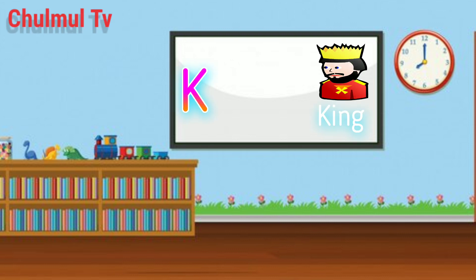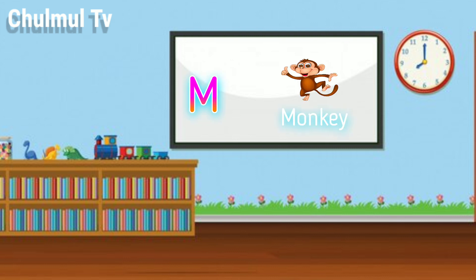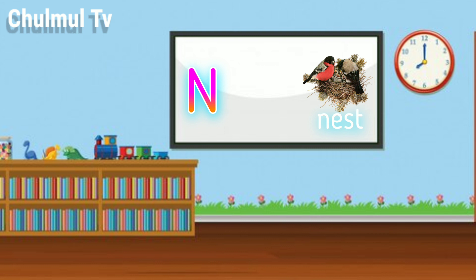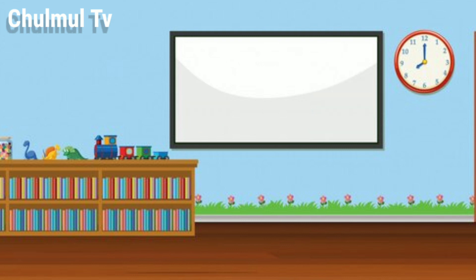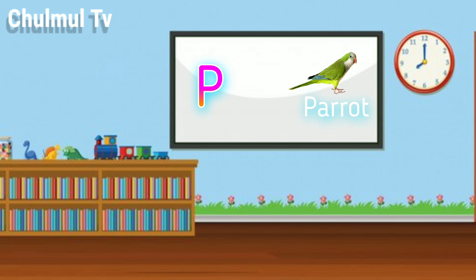K for king, L for lion, M for monkey, N for nest, O for orange.